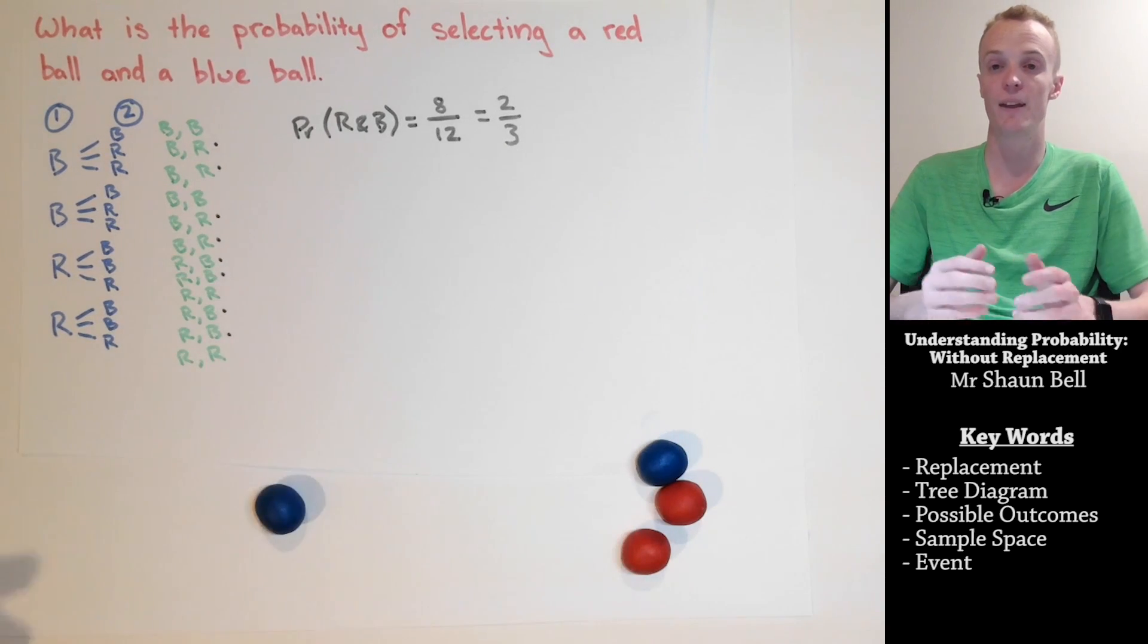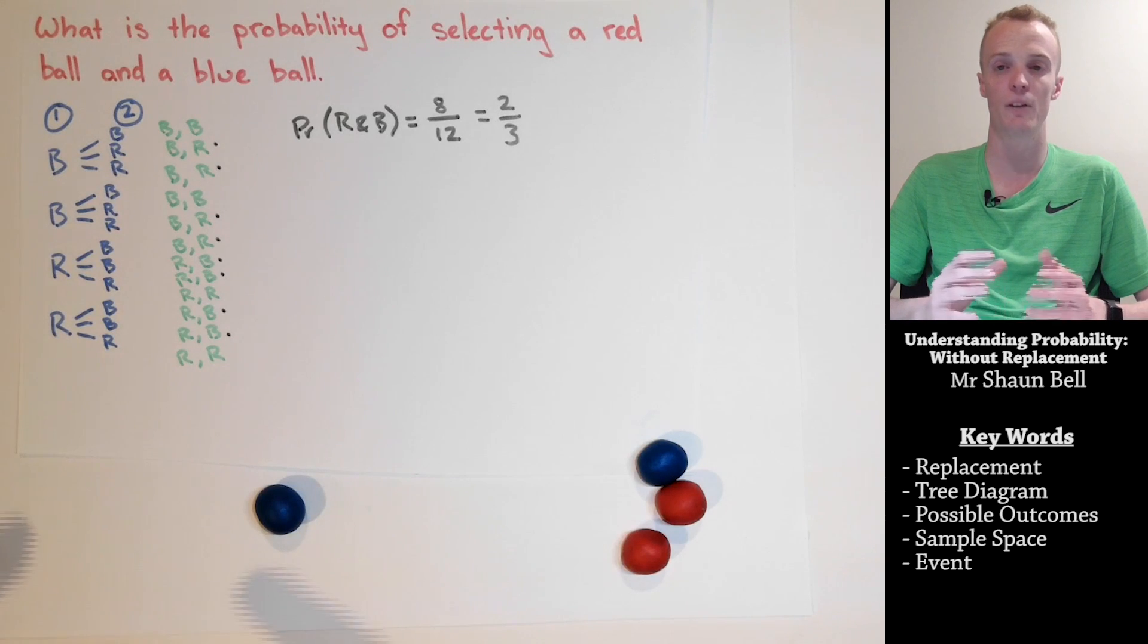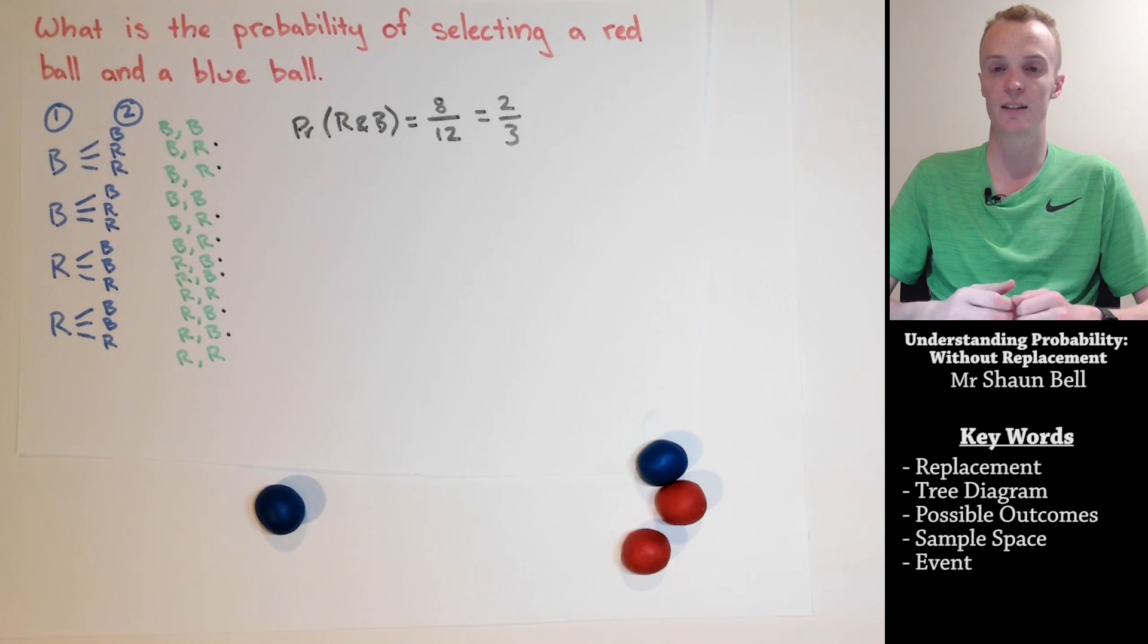So drawing a tree diagram like I have here really helps us in identifying all the possible outcomes that could occur which then assists us in answering the probability questions.